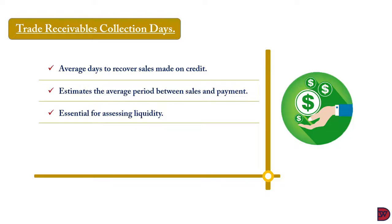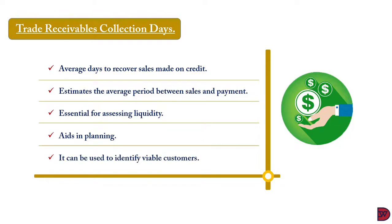If you are able to convert receivables within an appreciable period, it indicates your ability to settle short-term debt when it falls due. It also helps in planning — once you know the length of time or when you are going to receive money from your receivables, it will help you plan certain expenditures. Additionally, when you are going into a negotiation with a creditor, you will know how to negotiate the payment period. Lastly, it can be used to identify viable customers. Once you have set your receivable collection period, any new customer who doesn't have the ability to settle their debt within that period will not be brought on board unless under special circumstances.